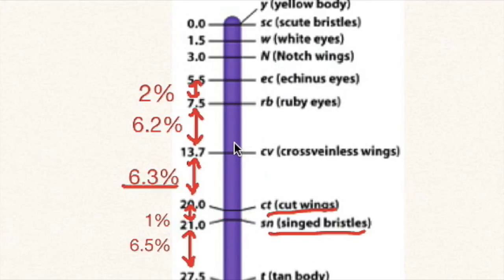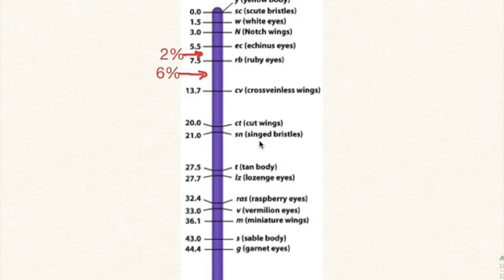In comparison, 6.3% between cross-veinless and cut wings, and 6.2% between ruby eyes and cross-veinless. Between scute bristles and white eyes, there is a low chance of genetic recombination, only a 1.5% chance.